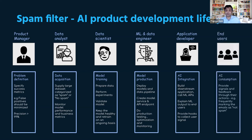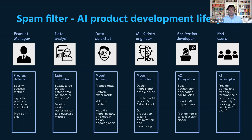End users consuming the AI application are also very important in the product development lifecycle because they can give useful signals and feedback that help make models more effective. For example, going back to the spam example: suppose the model misclassifies an email that is not spam and sends it to the spam folder. The user goes to the spam folder, finds it, and marks it as non-spam. This is an example of a misclassified email where the user's action provides useful feedback. You can incorporate that to understand why the email was misclassified, take that feedback in so the model gets better, and in the future those kinds of mistakes won't happen.